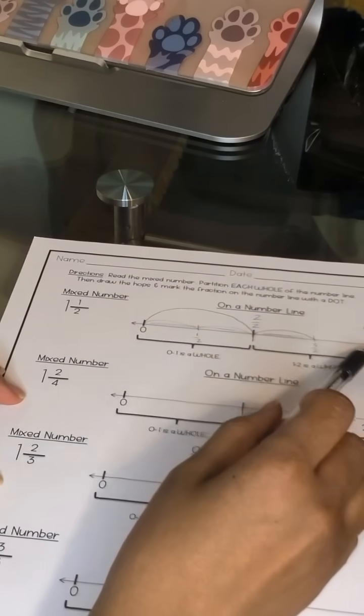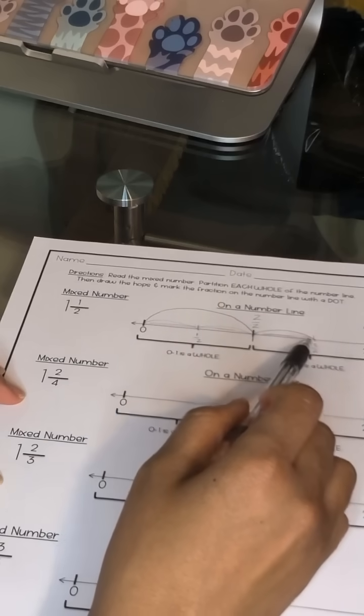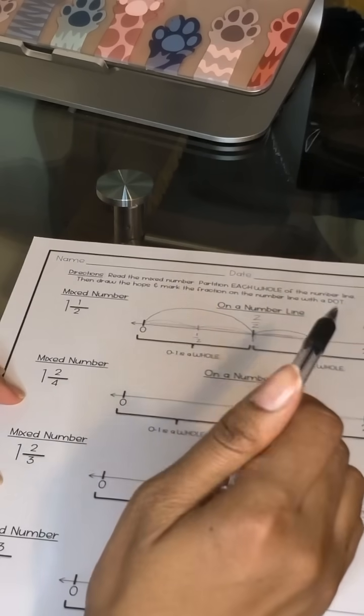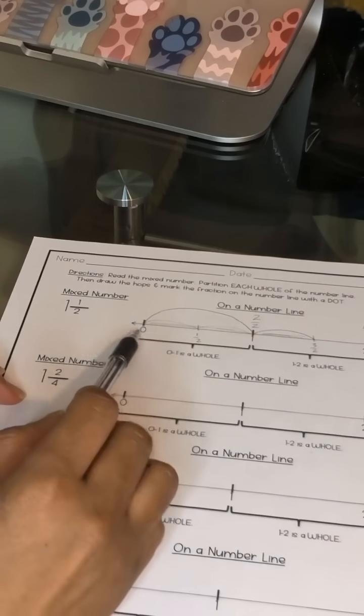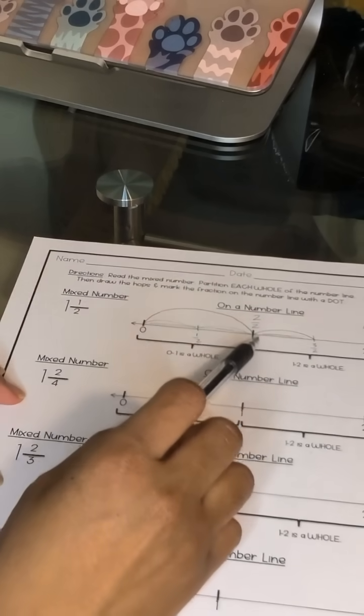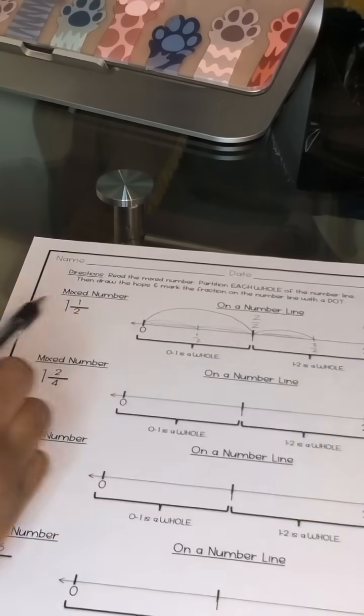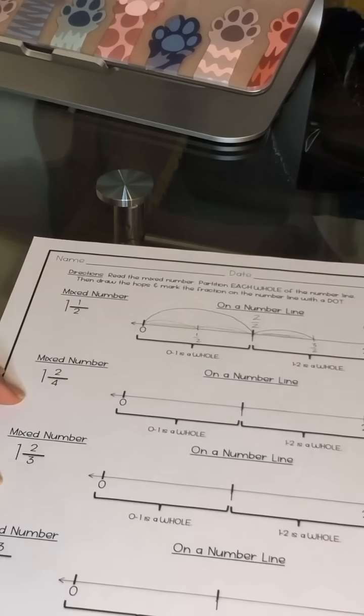And since we didn't do another whole jump, we only did half of a jump, three halves is where we would stop on the number line. So this jump shows one whole jump and a half jump, which is one whole and a half.